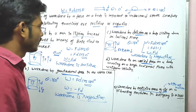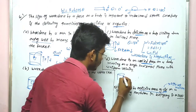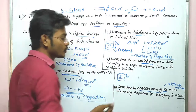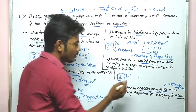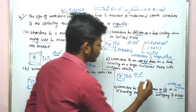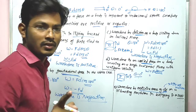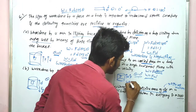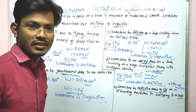Fourth case: work done by the applied force on a body moving on a rough horizontal plane with uniform velocity. The normal reaction acts upward, displacement is to the right, and the applied force also acts in the same direction as displacement. So θ = 0°, and W = F·d·cos0° = fd. Therefore work done is positive.